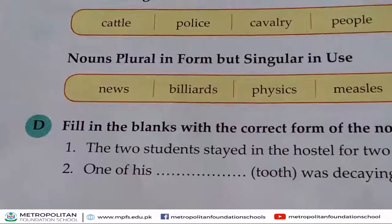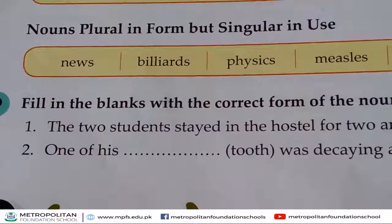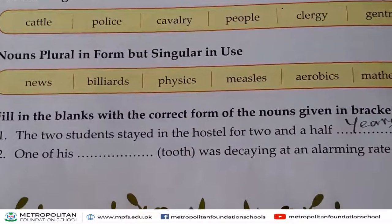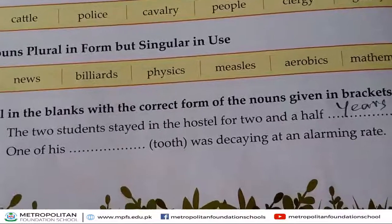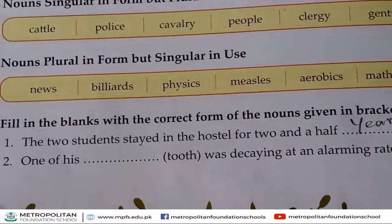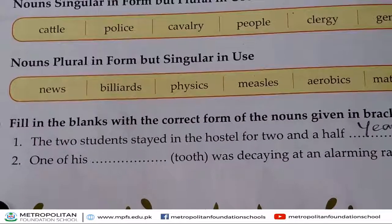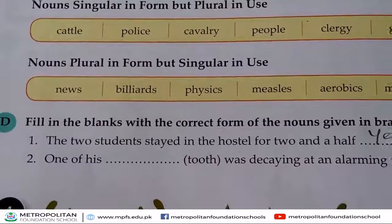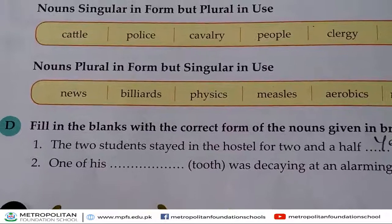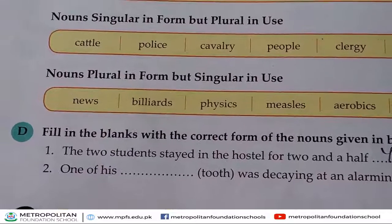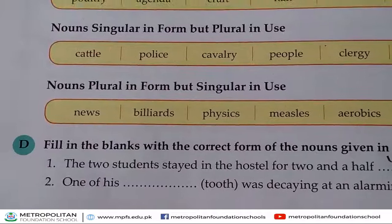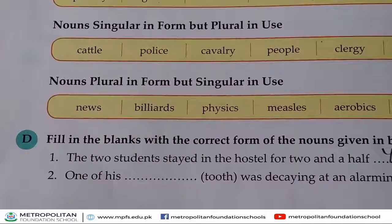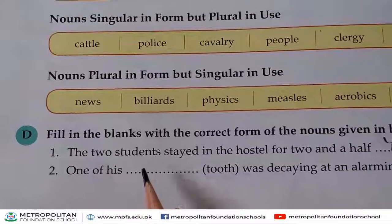The second one: 'One of these ___ tooth was decaying at an alarming rate.' The bracket word is 'tooth', so we have to change it into the noun form. We will write 'teeth'.